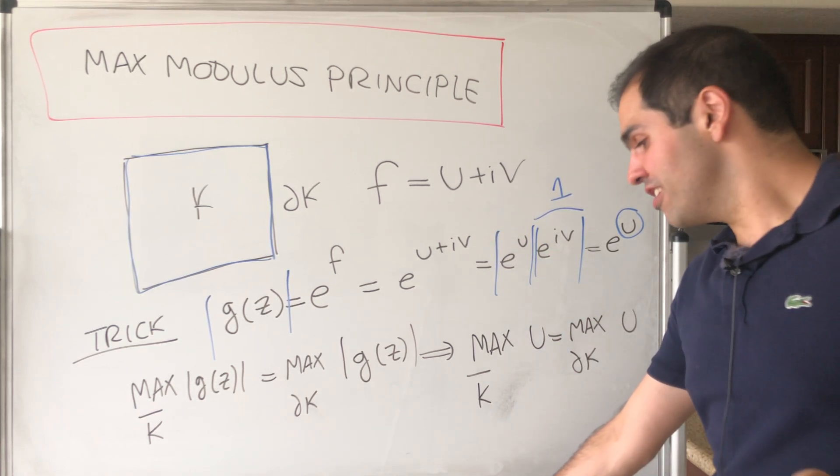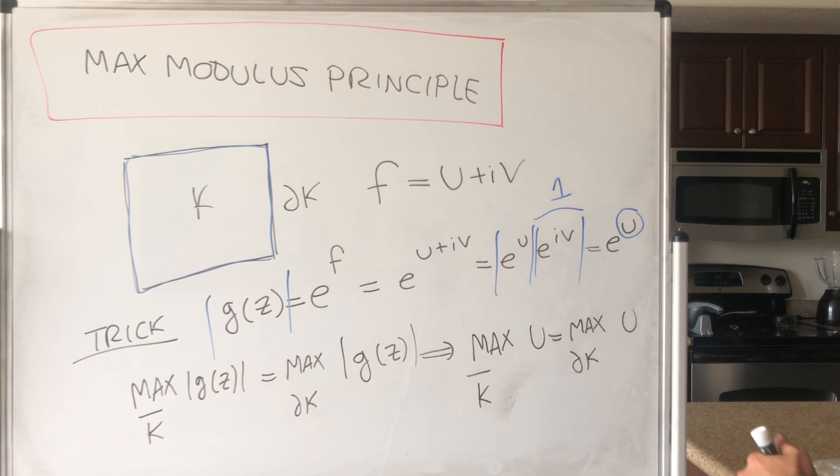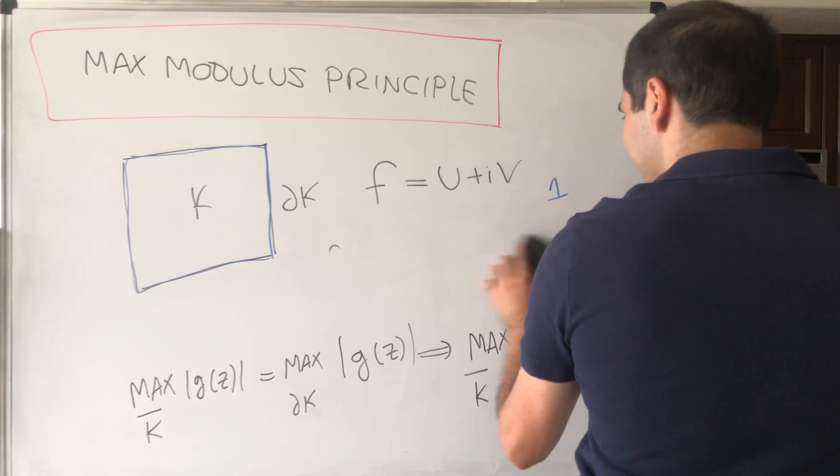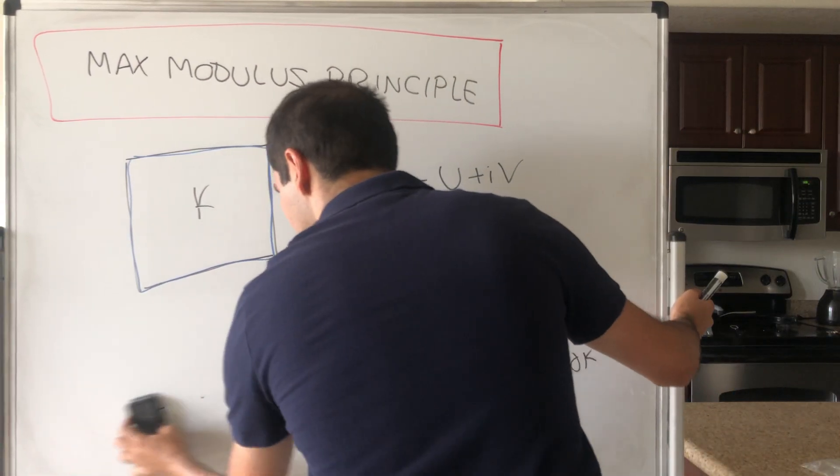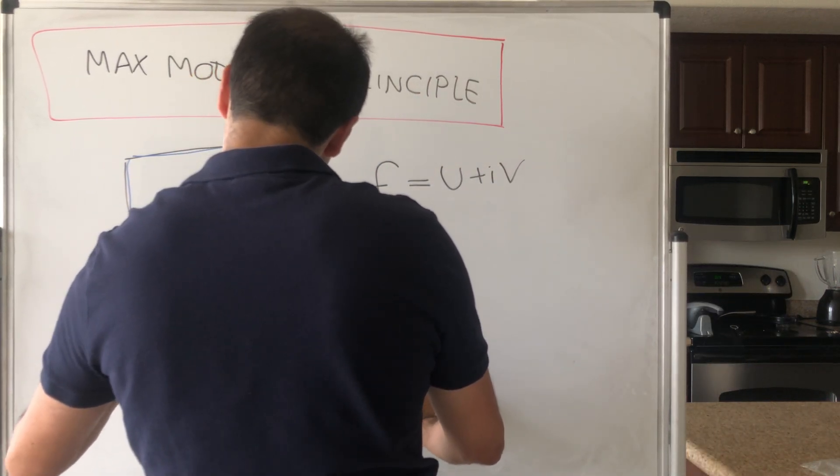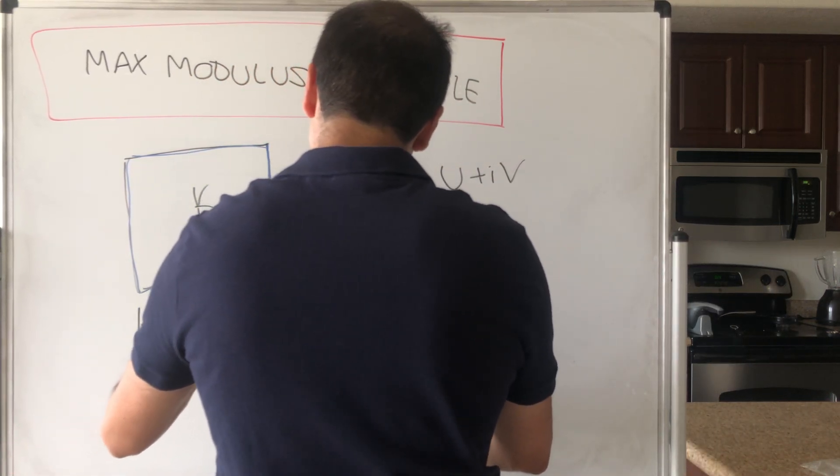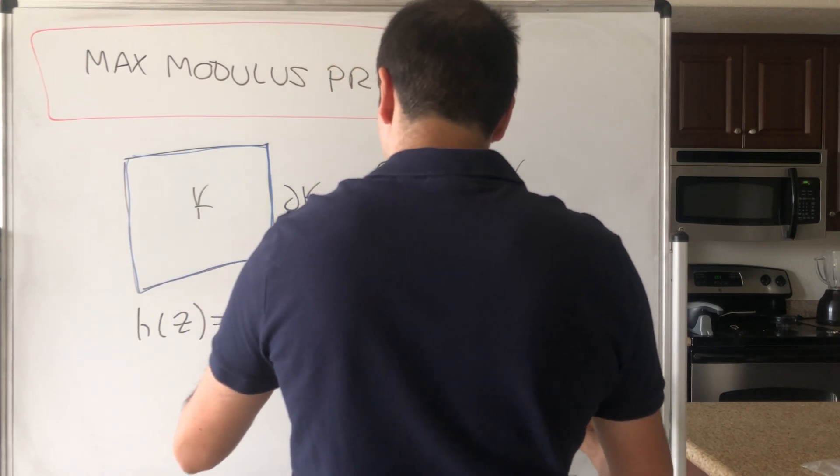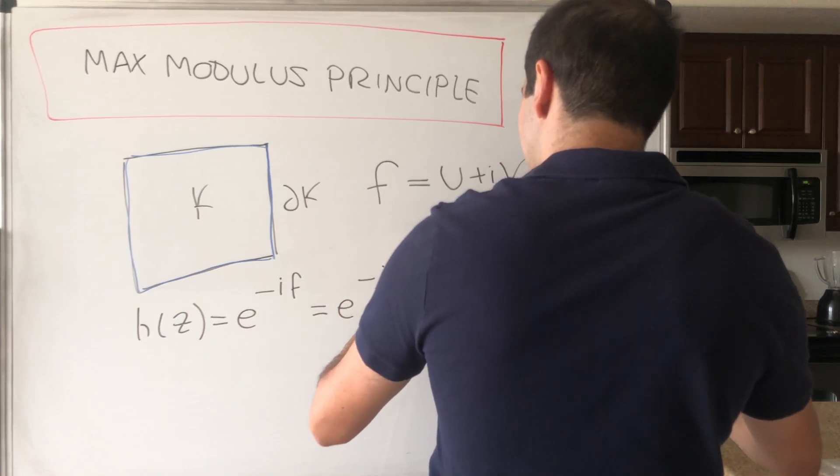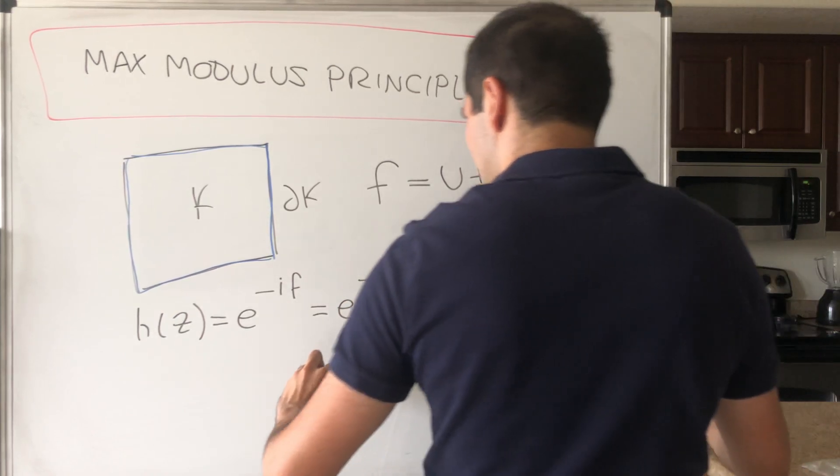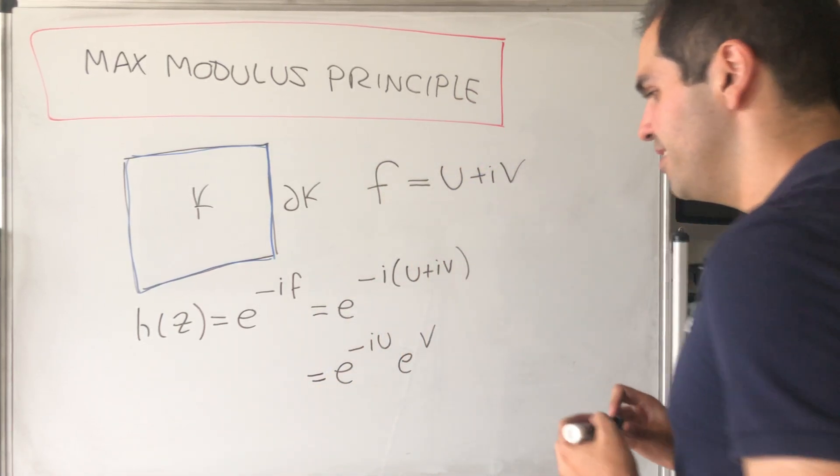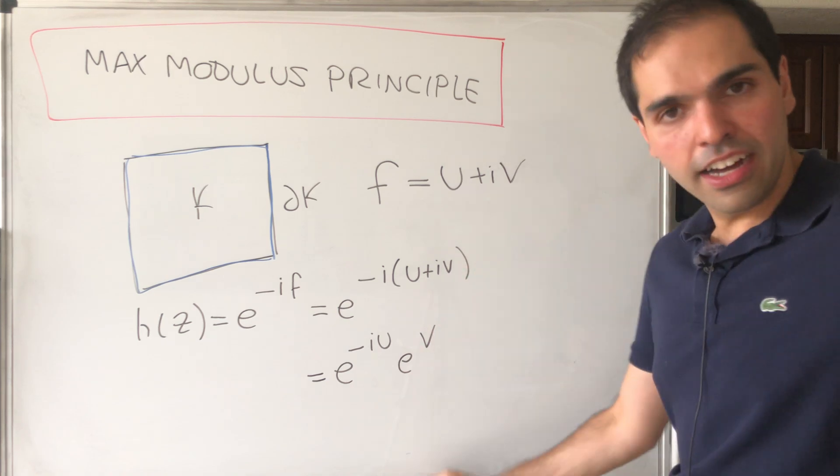And similarly for the minimum. So it turns out if you want to do the minimum, you don't use quite this, you just use the following, which is also super neat: you use the function h(z) that is e^(-if). And why? Because that is e^(-i(u+iv)), and that is e^(-iu) and then e^v, so that's e^v, and then you take the absolute value.